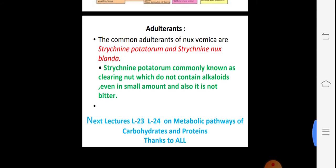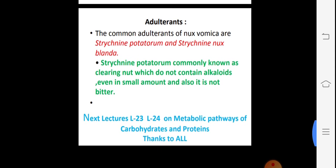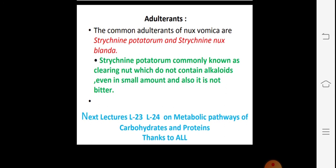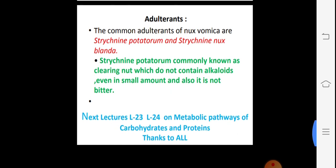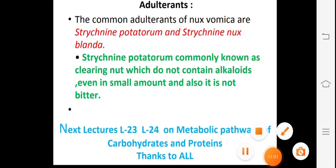The main adulterants — mixing of the same drug — include two species: Strychnos potatorum and Strychnos nux-blanda. These seeds are commonly added into the original drug. Strychnos potatorum, commonly known as clearing nut, does not contain alkaloids even in small amounts, and so is easily added as an adulterant. These are the two examples: one is Tinospora cordifolia and this is Strychnos nux-vomica. We will see the next topic in the next lecture. Thanks to all.